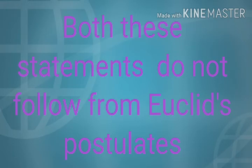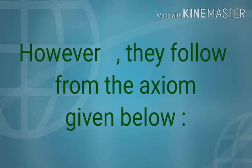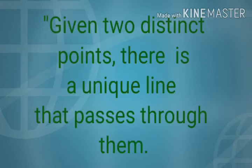The third question is: do they follow from Euclid's postulates? Both these statements do not follow from Euclid's postulates. However, they follow from the axiom: given two distinct points, there is a unique line that passes through them.